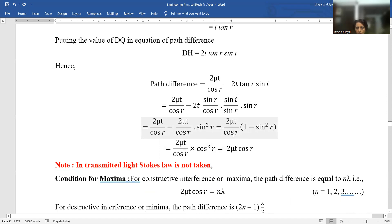Take out 2 mu T cos R into 1 minus sin square R. There is a formula sin square theta plus cos square theta is 1. So 1 minus sin square theta becomes equal to cos square theta. So path difference becomes equal to 2 mu T cos R.